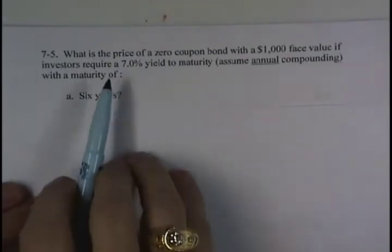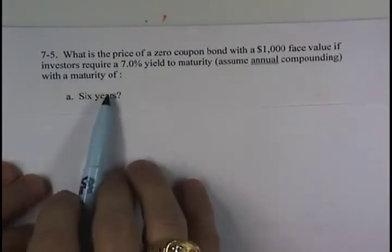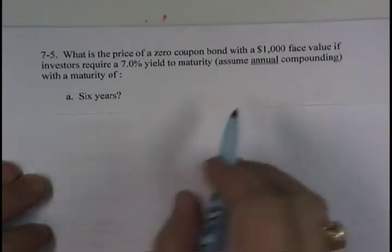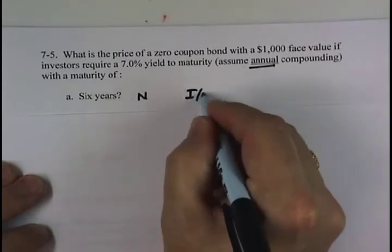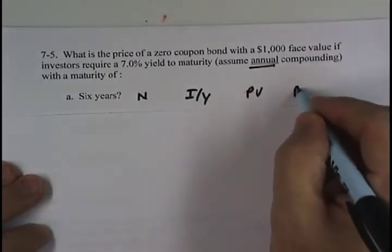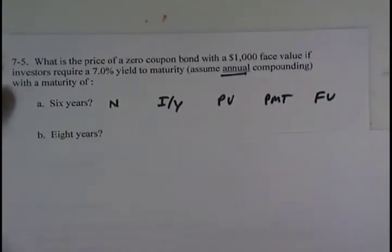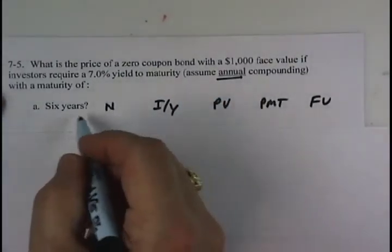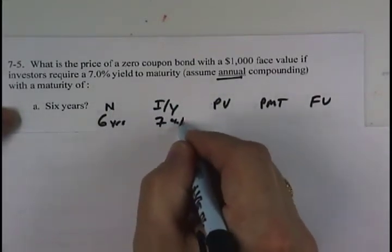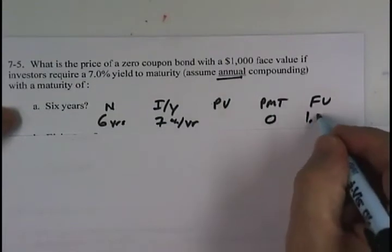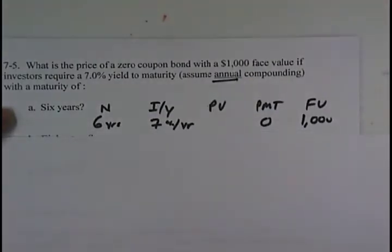In problem 7.5, we are to price a zero-coupon bond with a $1,000 face value and a 7% yield to maturity under different lengths of maturity. We are told to assume annual compounding even though the book does suggest to use semi-annual because most bonds are semi-annual coupon bonds. The book suggests treating zero-coupon bonds the same way and discounting on a semi-annual basis. In this case, everything is annual, so that simplifies things. For Part A, six years, and we are going to discount at 7% per year with no coupon payments. So all we are discounting is that lump sum $1,000 par value paid at maturity.